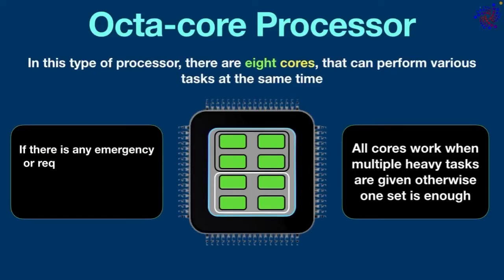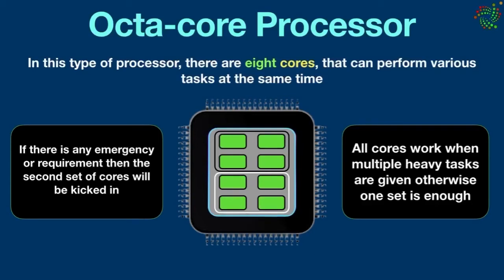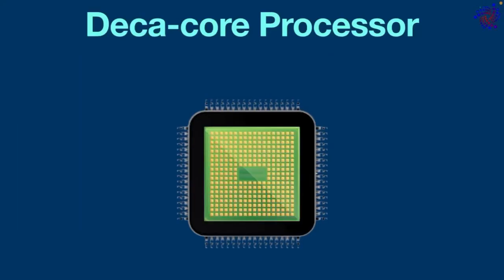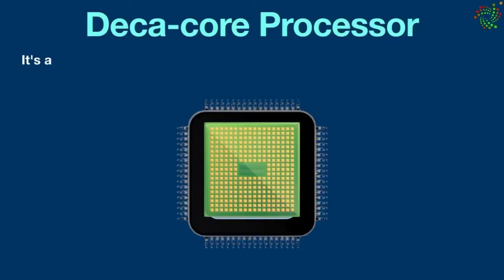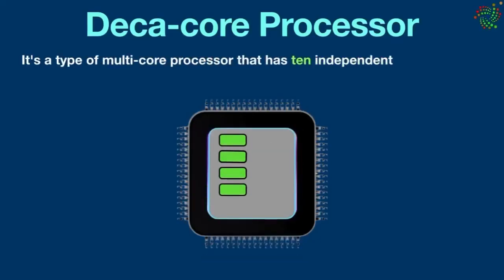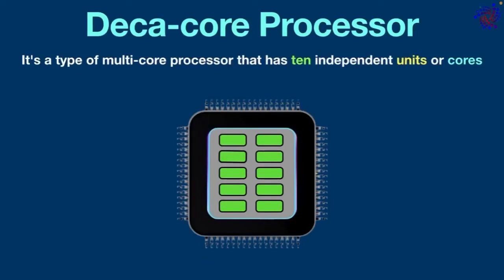If there is any emergency or requirement, the second set of cores will be kicked in. Octa core uses comparatively more power than quad core systems. Octa core is made to handle complex and heavy graphics along with rendering capabilities. Finally, deca core processor — it's a type of multi-core processor that has 10 independent units or cores.